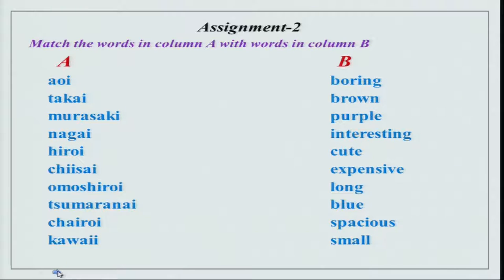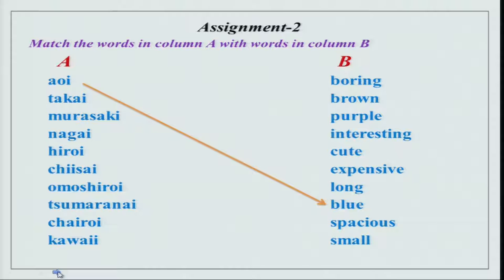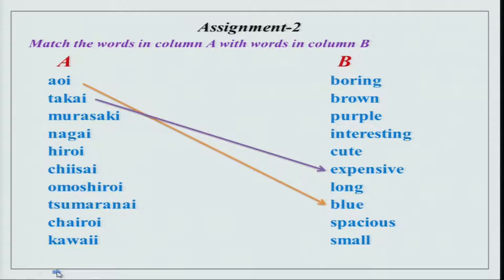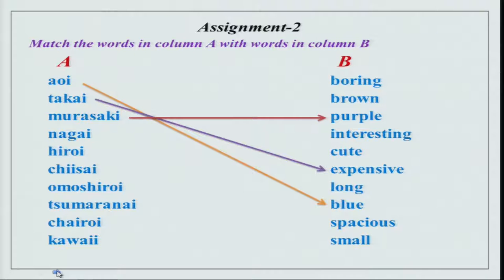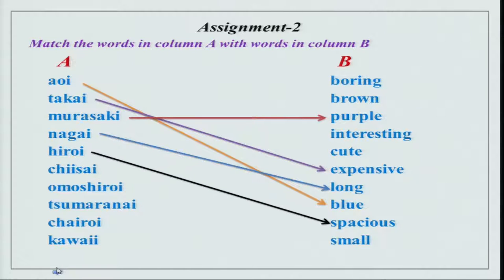The second assignment, as we have been doing all the time, is match the words in column A with words in column B. We have these words listed in Roman for you and the meanings are in English. Aoi is blue, takai, murasaki, nagai — you can see what the meaning is. Hiroi, chiisai — and it is chiisai, not chisai. It is not a small sound, it is a long sound chiisai.